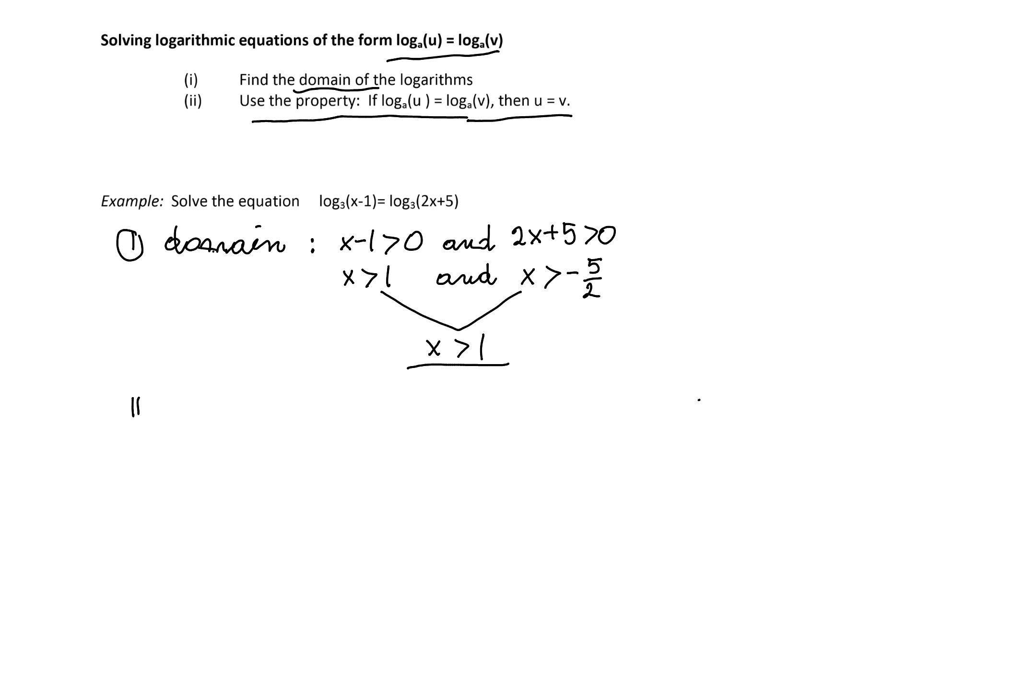Once we have the domain, we go to step 2. Since the equation is in the form logarithm to the base a equals logarithm to the base a, we'll conclude that x minus 1 will have to equal 2x plus 5. The inputs of those logarithms have to be equal.